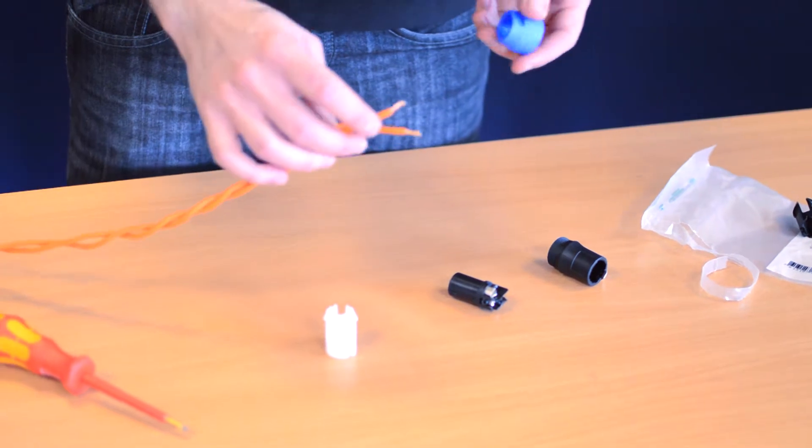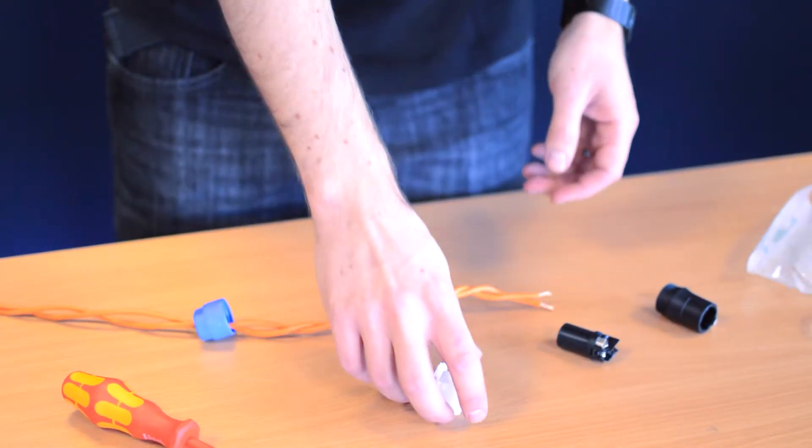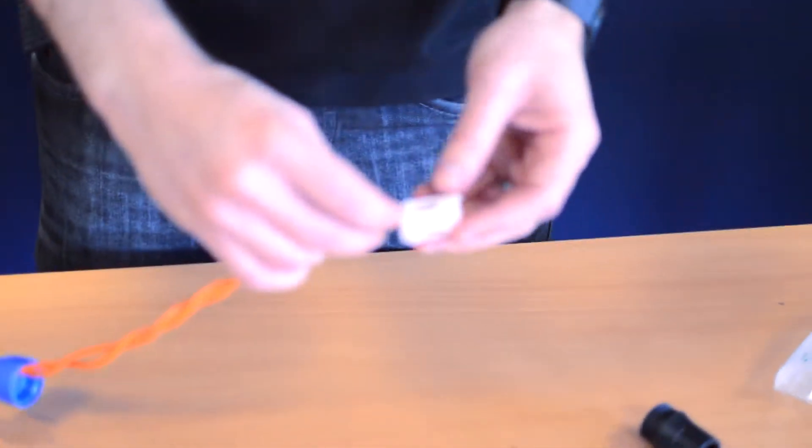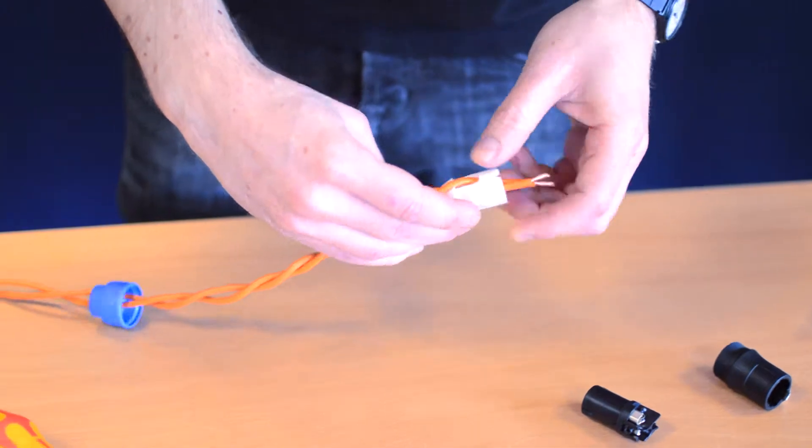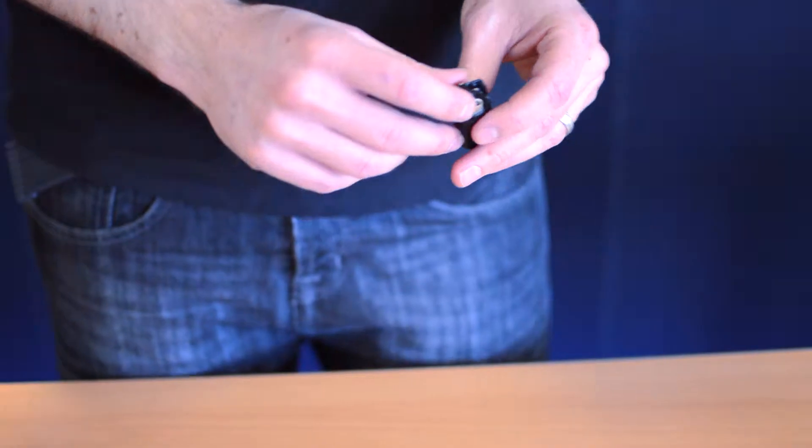First thing you need to do is put the blue brush over the cable, slides on like that, and then put the strain relief on as well. So you've got those on, and now you're ready to fit the actual connector.